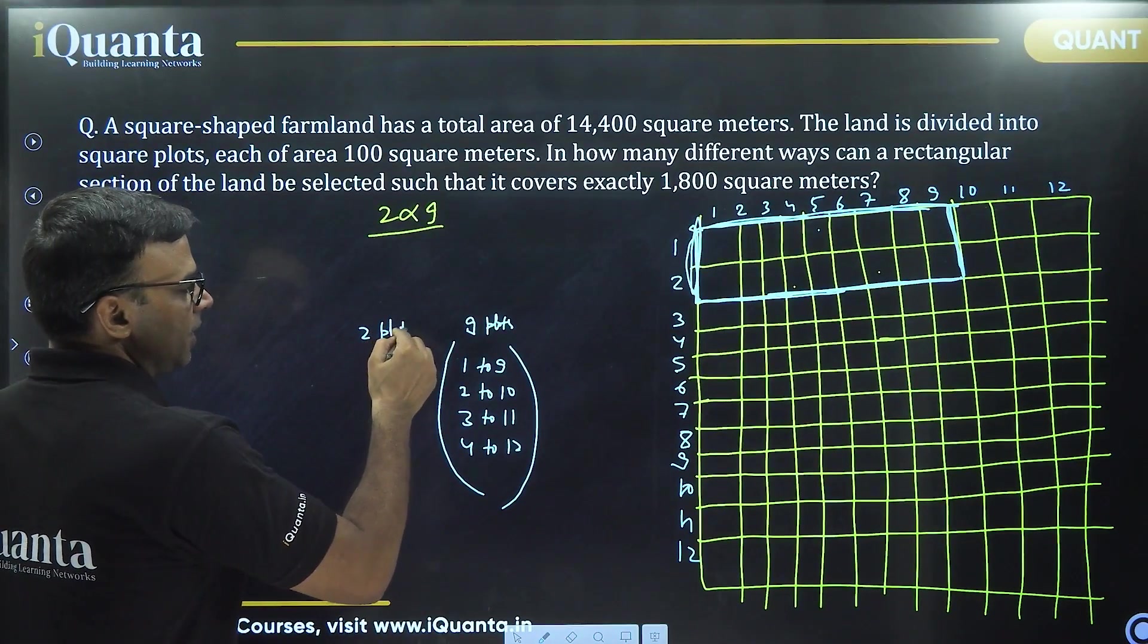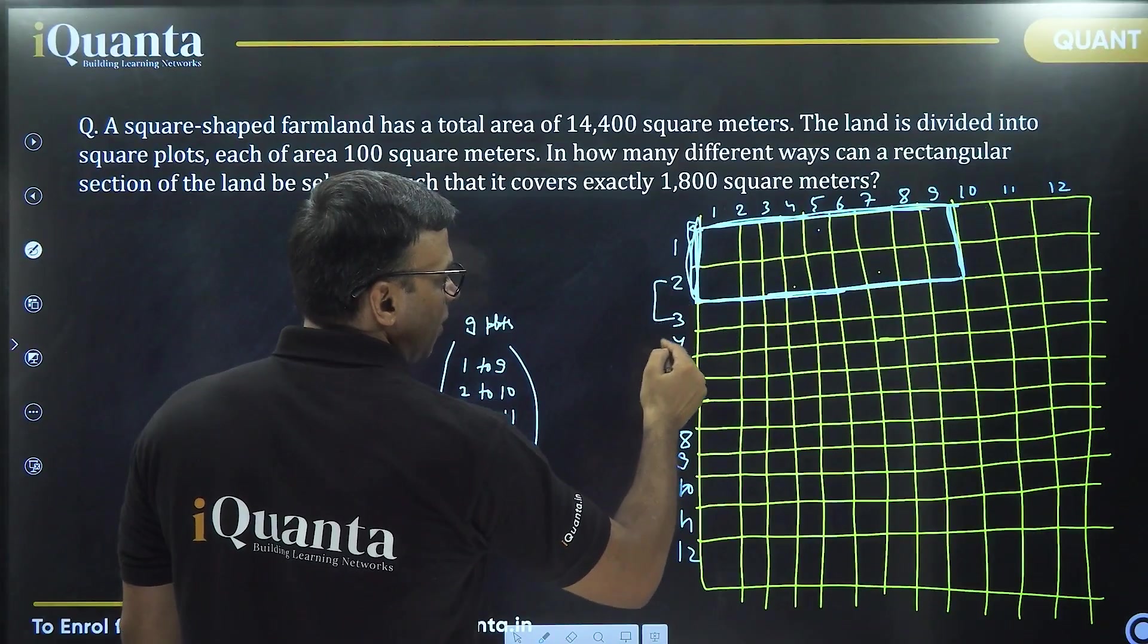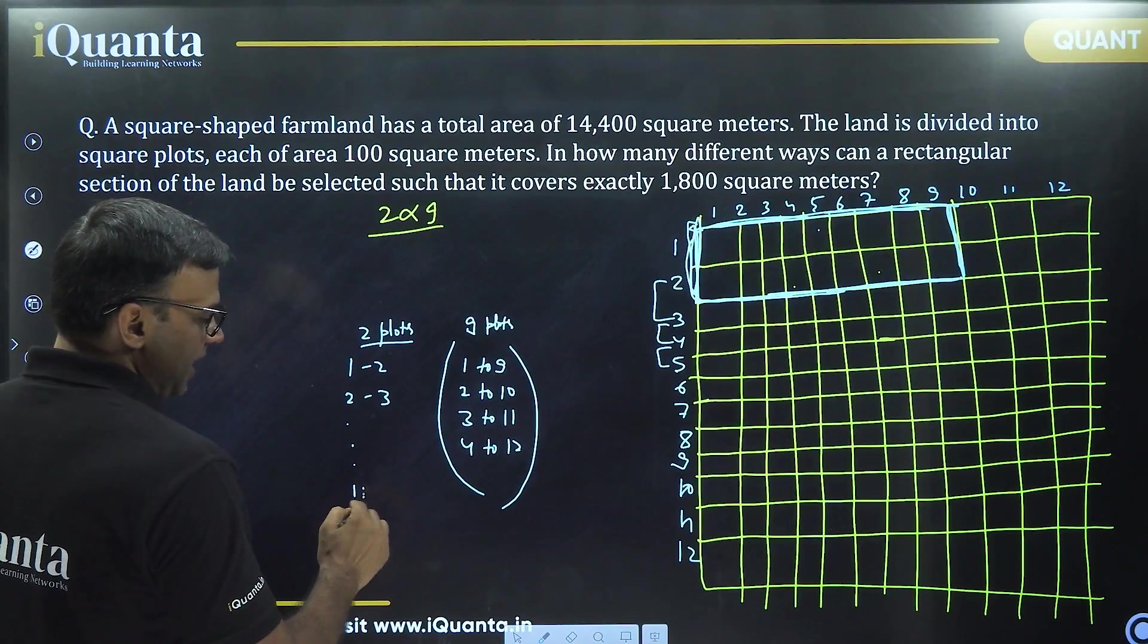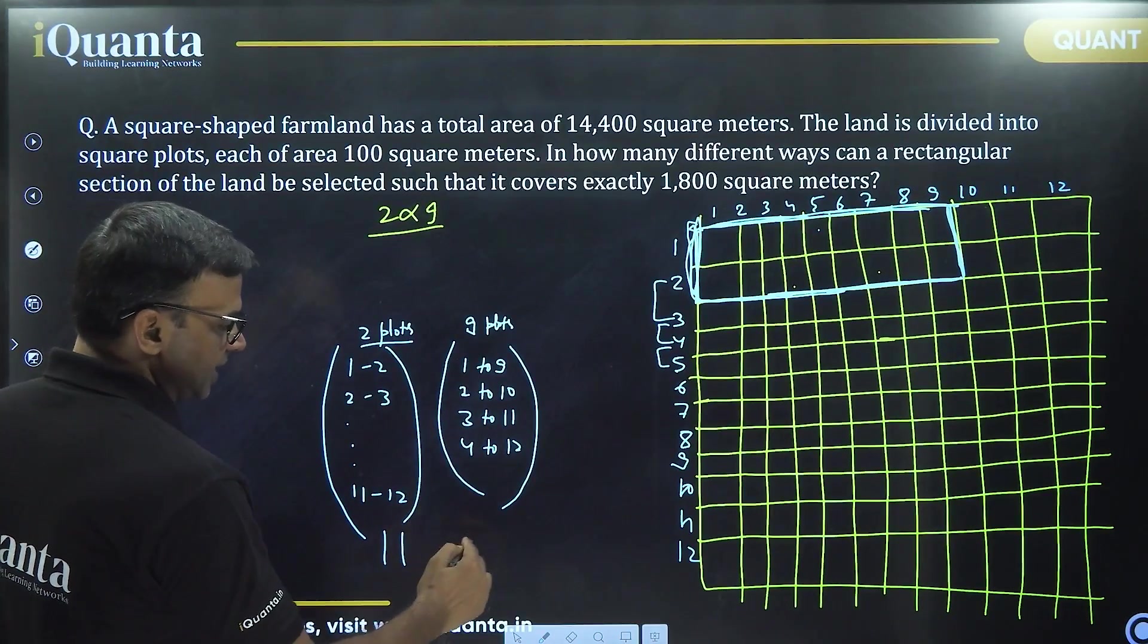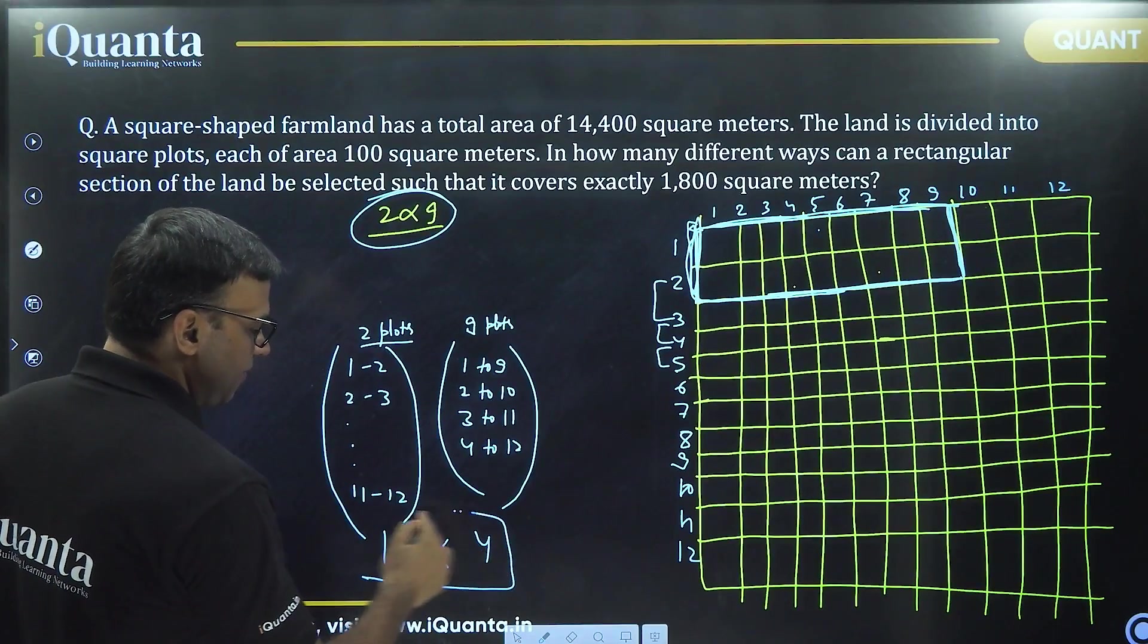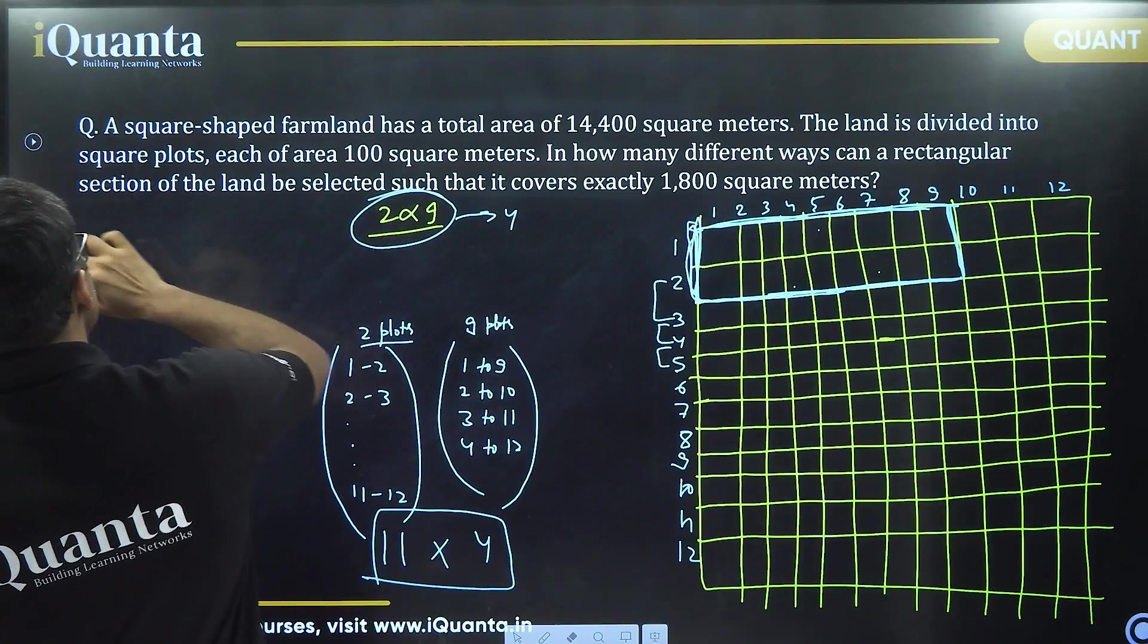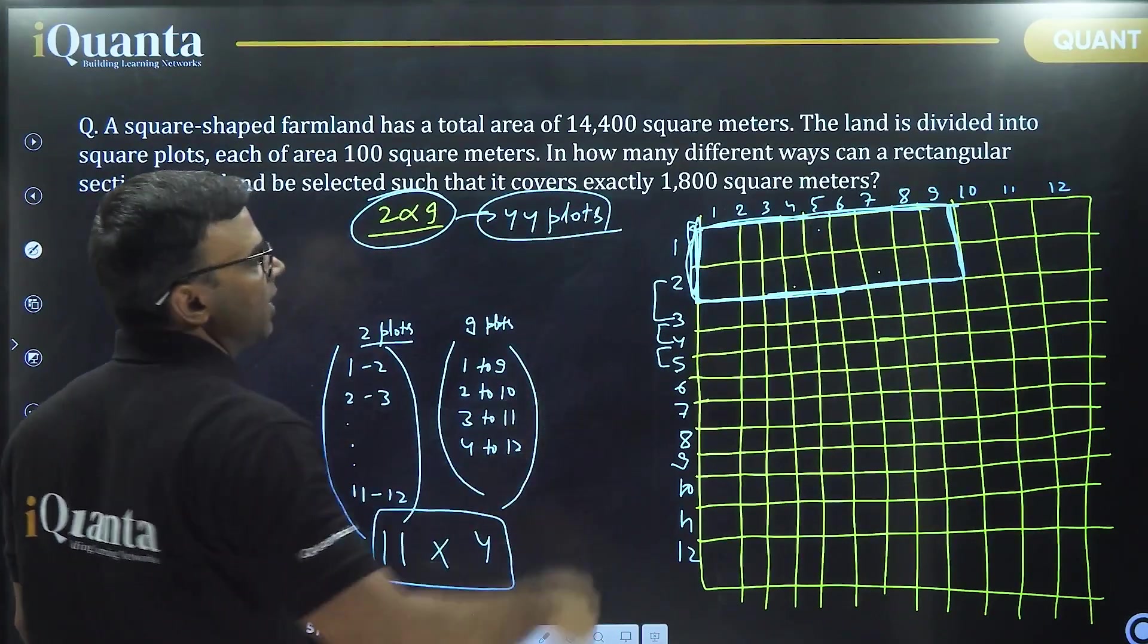Two plots. How do you take it? You can take 1, 2 or you could take 2, 3 or you could take 3, 4 or you could take 4, 5 and so on. So 1, 2, 2, 3 up to the last one would be 11, 12. So these are 11 possibilities and these are 4 possibilities. So for this size 2 into 9, we have 44 square plots, 44 plots of area 1800 square meters that we can get. Please note down carefully.